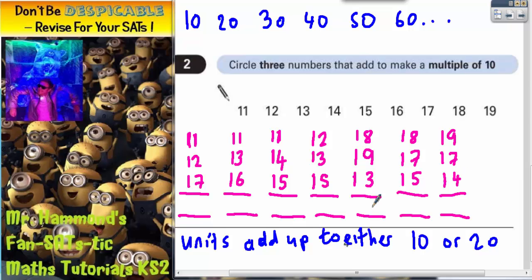Let's just check the strategy. If the units digits add up to either ten or twenty, the overall total would be a multiple of ten. Let's check that. One plus two plus seven makes ten. One plus three plus six makes ten. One plus four plus five makes ten. Two plus three plus five also makes ten.